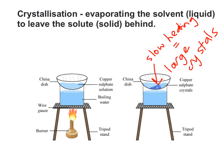This diagram shows exactly how to set this up in a lab. We would have a china evaporating dish, and into there we're going to put the solution — in this case, a copper sulfate solution, where copper sulfate is the solute dissolved into water or alcohol. We heat using a Bunsen burner. We can heat the china dish directly, or, which is often safer, we can heat a beaker of water to boil it, and that passes the heat on to the china dish.